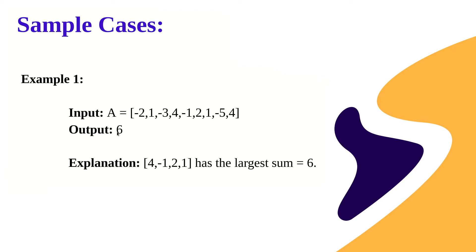So why is six the answer? If we take the subarray minus two plus one is minus one, minus one minus three is minus four, minus four plus four is zero — so till here we have zero as the sum. If we take one minus three four, the answer is two. We need to find all the subarrays and return the maximum sum. The brute force approach is to find all possible subarrays and return the one with the largest sum.